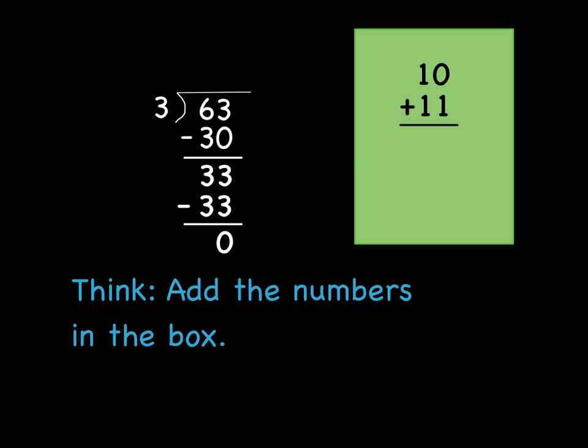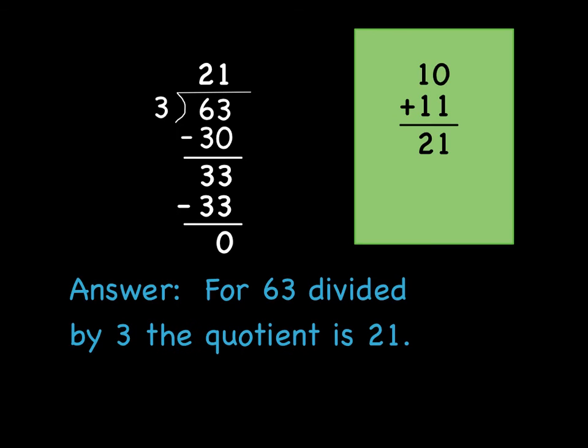All we have to do now is add the numbers that we wrote over here in our box. And 10 plus 11 is 21. So the answer for 63 divided by 3 is 21. The quotient for 63 divided by 3 is 21.